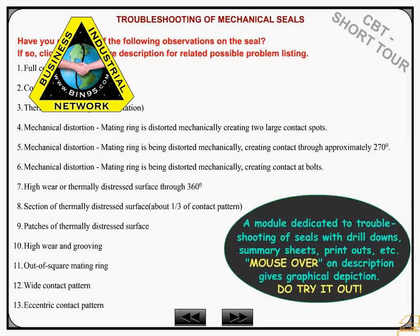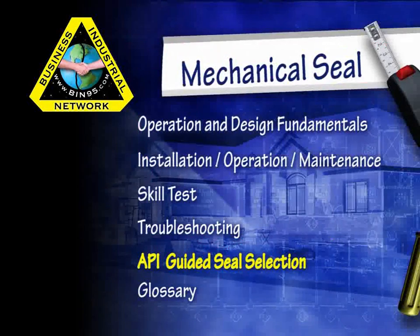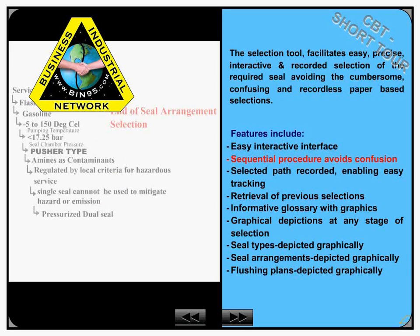The module dedicated to troubleshooting of seals is full of drill-downs, summary sheets, and printouts to help solve the problem. The API 682 guided seal selection tool serves as a valued assistant towards understanding and performing seal selection.